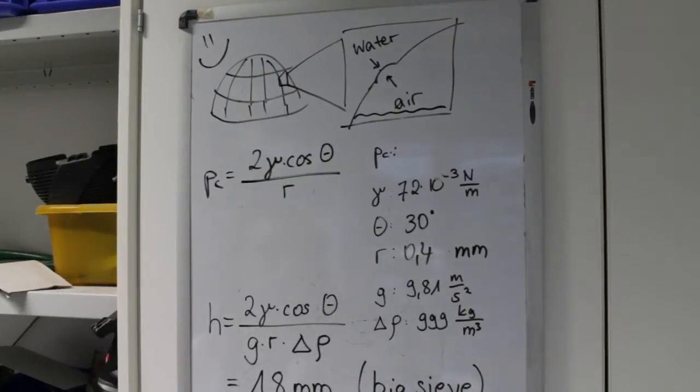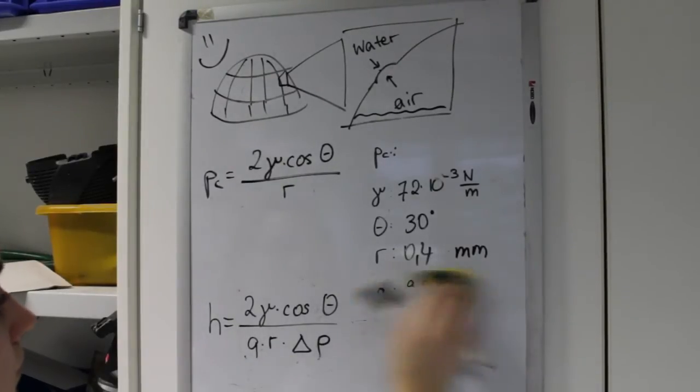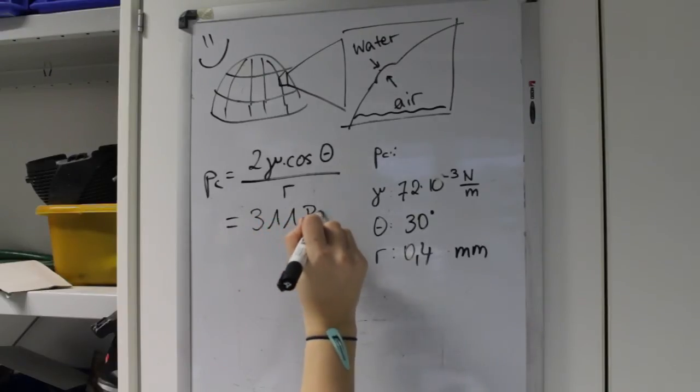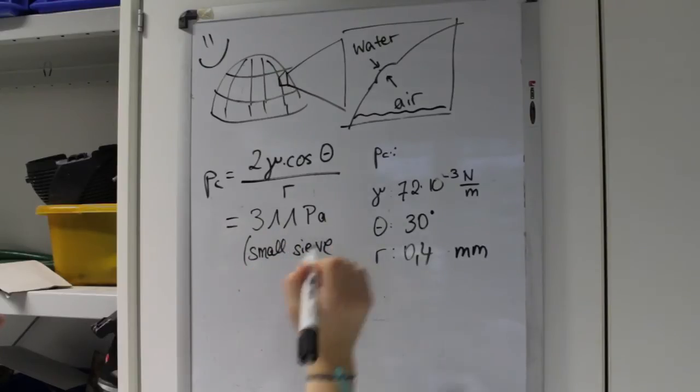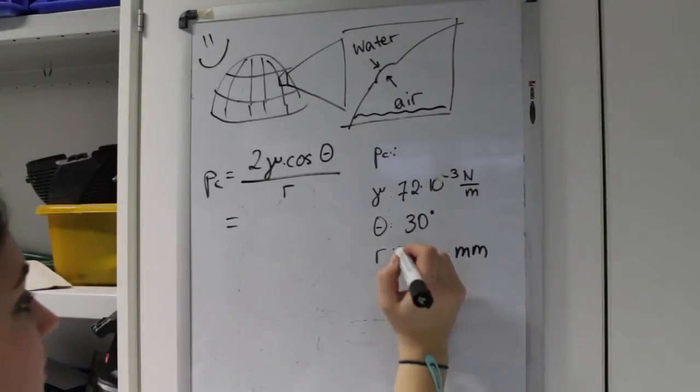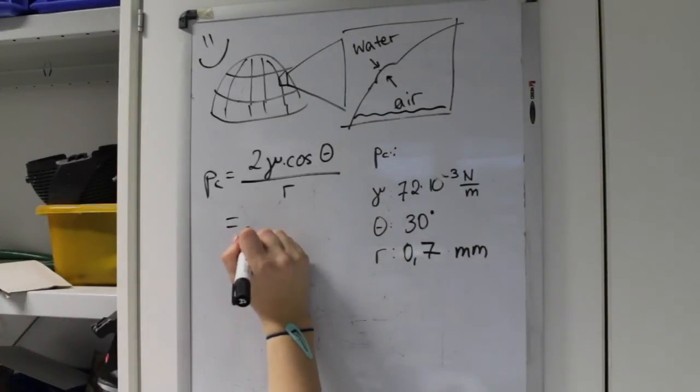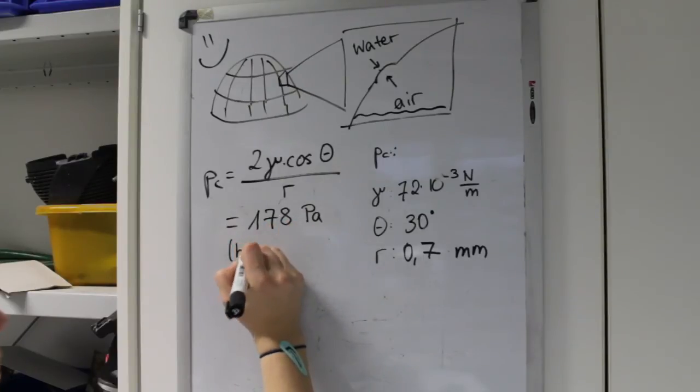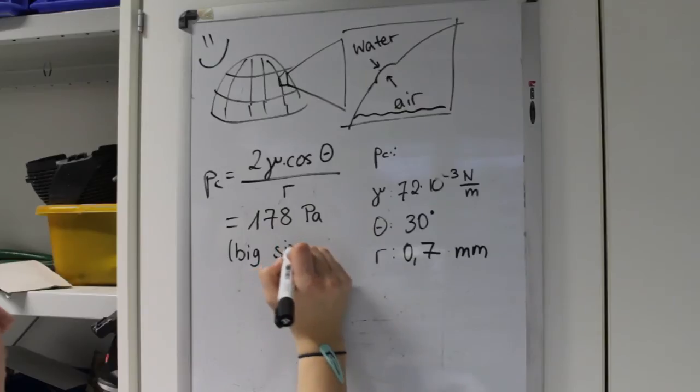To leak through the pores, the air has to reach a critical pressure that is higher than the capillary pressure, Pc. We can now calculate the capillary pressures for the two sieves. For the small sieve with a pore throats radius of 0.4 mm, the critical pressure is 311 Pa. In the bigger sieve with a pore throats radius of 0.7 mm, the capillary pressure is 178 Pa. This verifies our scientific observations that it is easier for the hydrocarbons to leak through larger pores.